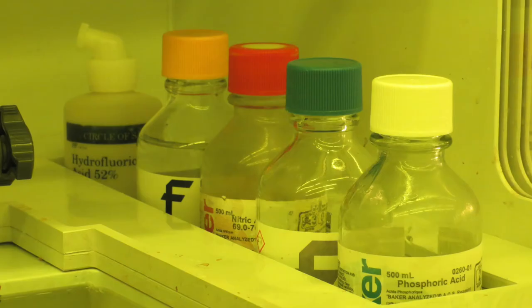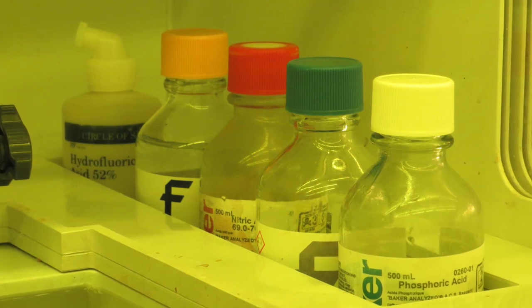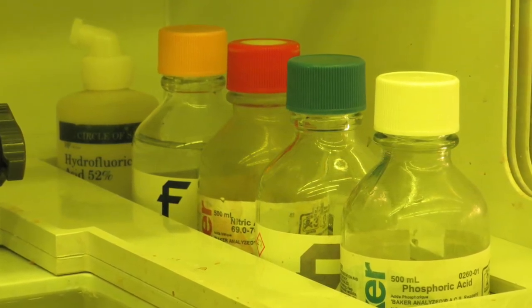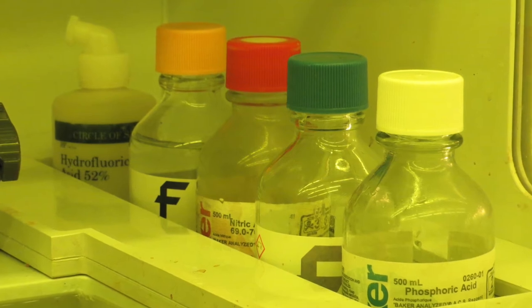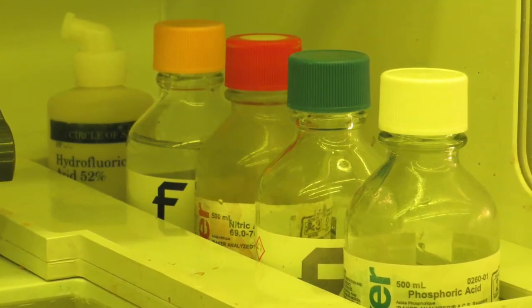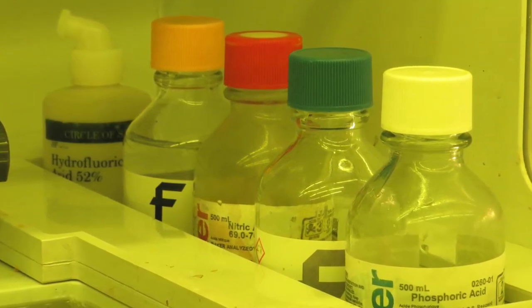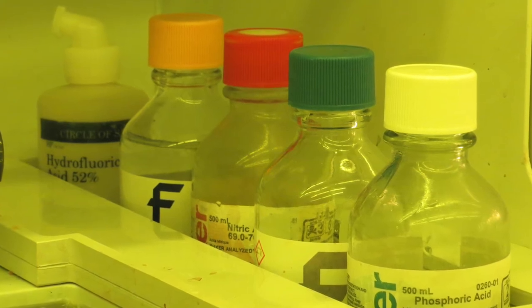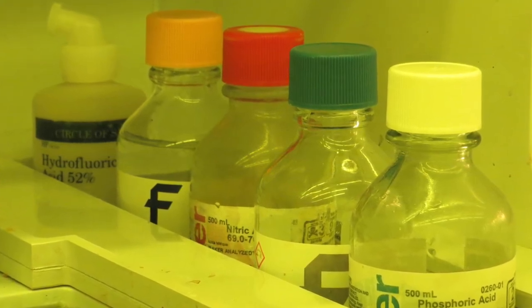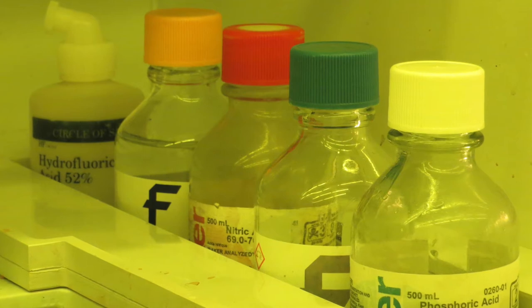We provide many of the common acids such as phosphoric acid, hydrochloric acid, nitric acid, sulfuric acid, hydrofluoric acid, as well as some common etchants such as BOE, chromium etchant, gold etchant, which are stored in the rollout drawers below.